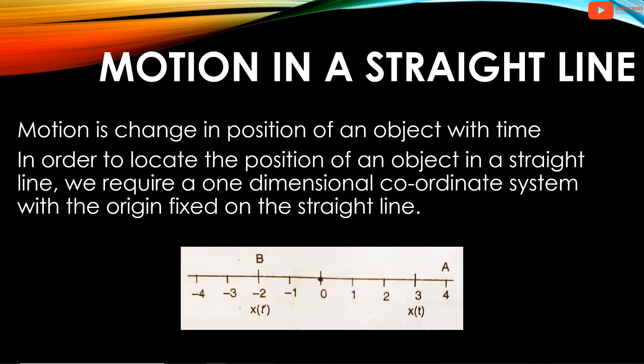Motion is the change in position of an object with time. In order to locate the position of an object in a straight line, we require a one-dimensional coordinate system with the origin fixed on a straight line.